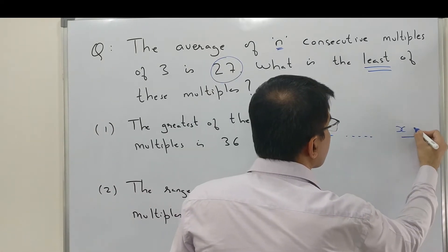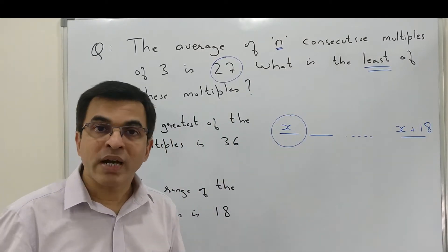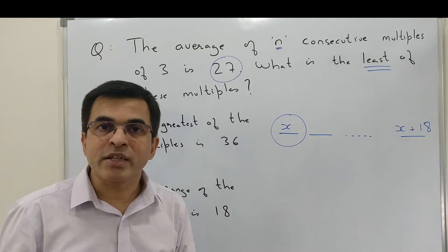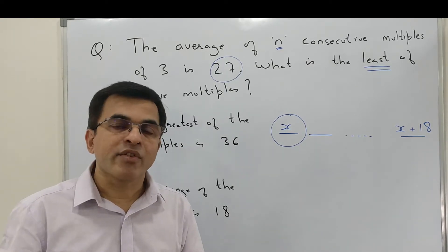So if we assume the lowest as x, the highest value as per statement two has to be x plus 18. Once again we make use of the same concept that the average of the sequence is nothing but the average of its first and last terms.